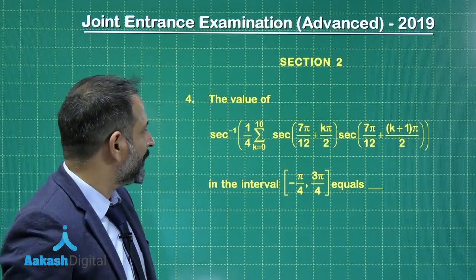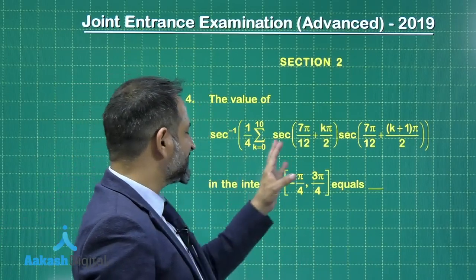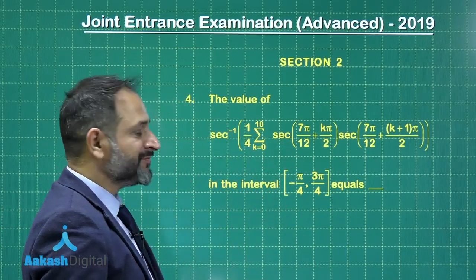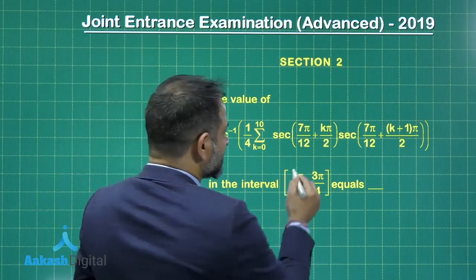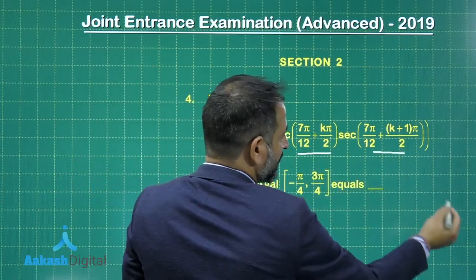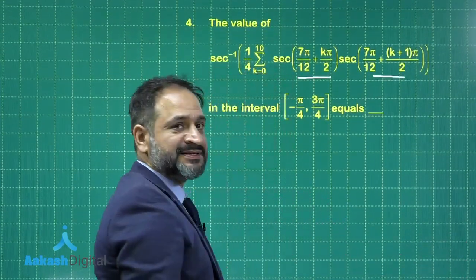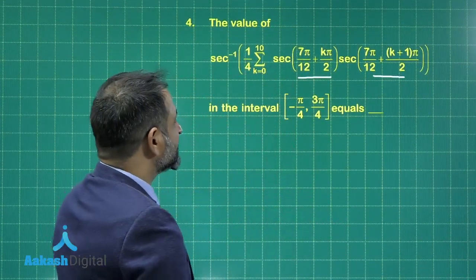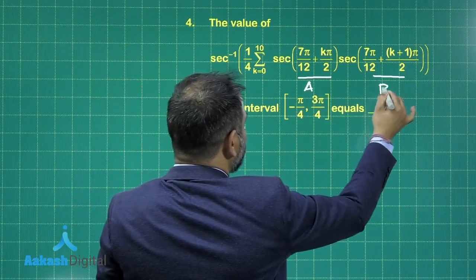The next problem seems to be a complicated one, again sigma summation of a trigonometric series and again secant inverse of that. If you notice, if you clearly notice this term and this term, the difference here is constant and the difference is pi by 2. So for simplicity I am taking this angle as a and this angle as b.